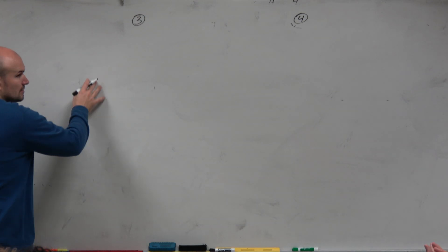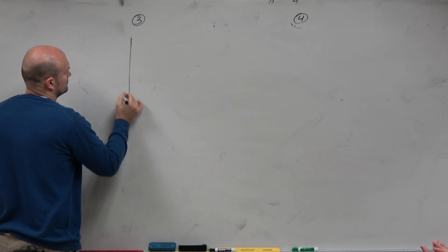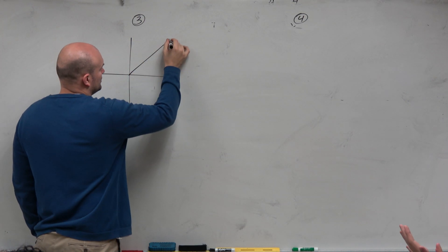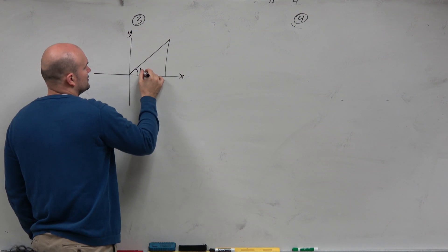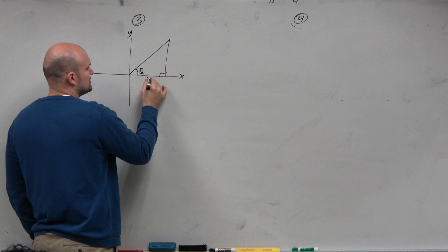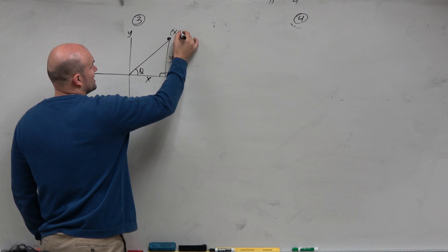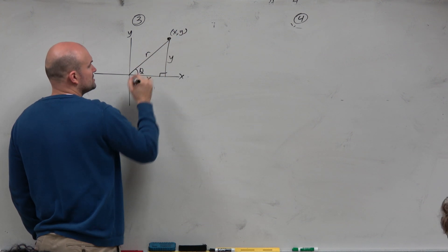Last class period, we looked at notes and said, well, if we have a triangle, we create a triangle on the x and y-axis for some angle theta. Then this was x, this was y. That's the coordinate point x comma y, and the hypotenuse is R.